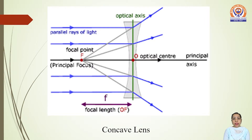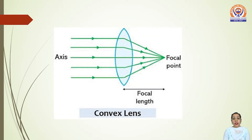Now, the distance between the focal point and the optical center is the focal length. So here, small f is the focal length of the concave lens. Similarly, the focal length of the convex lens is the optical distance from the optical center to the focal point.